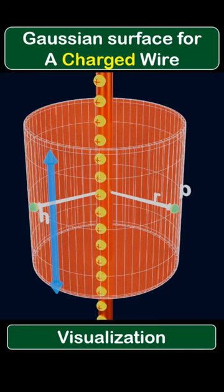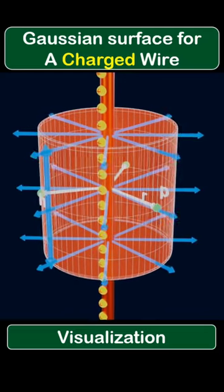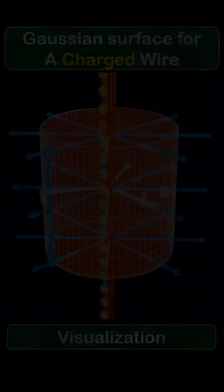We know that for this uniformly distributed positive charge on the wire, the electric field will be radially outward in a certain manner. For this reason, we need to calculate certain components.